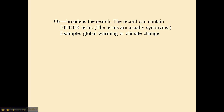OR is a little bit different. You use OR in between words that you are treating as synonyms. If you don't care which one is used by the author, you would use OR in between them. So 'global warming OR climate change' would find me the articles whether they contain the words global warming or whether they contain the words climate change. Either one is fine, so I will use OR in between.